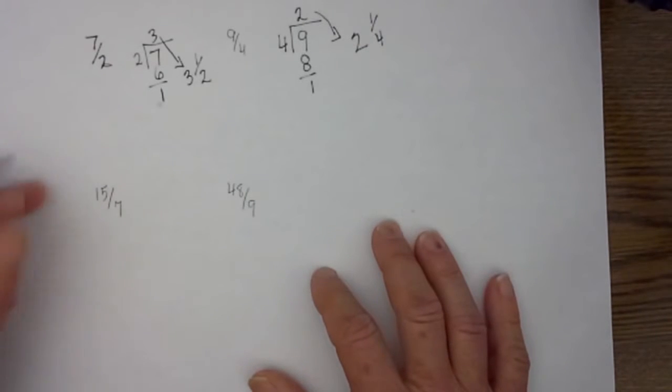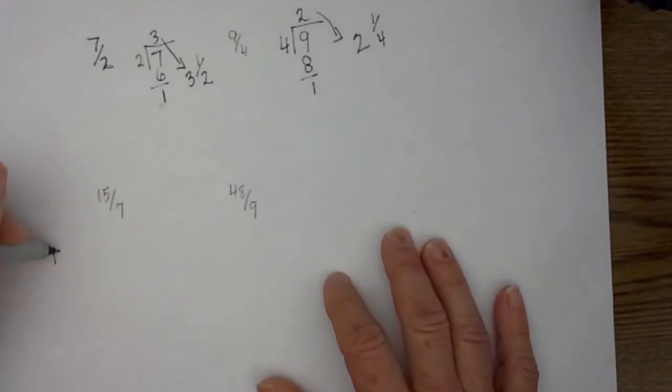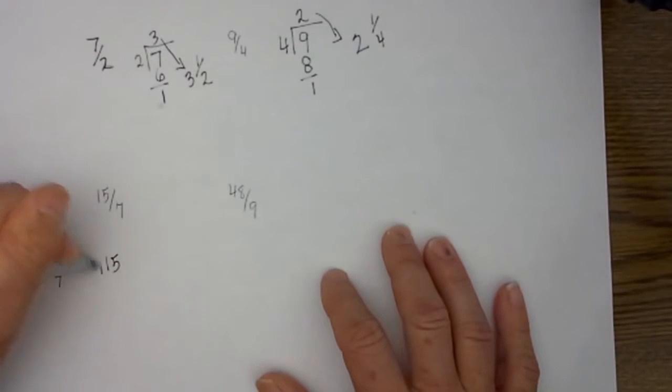Let's go. I will write this over here so it is not quite as crowded. 15 sevenths. Place 15 inside the dog house. 7 on the outside.